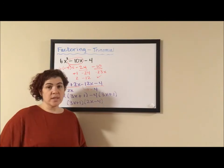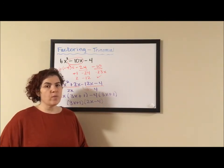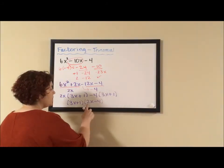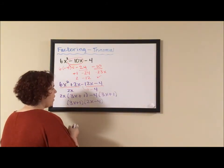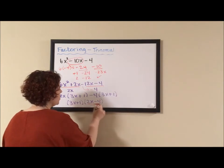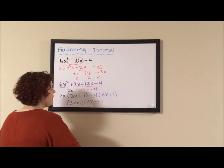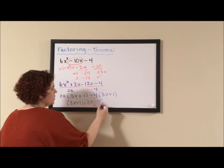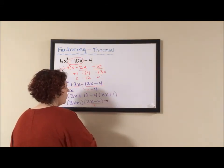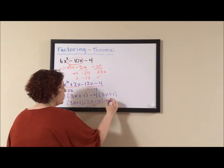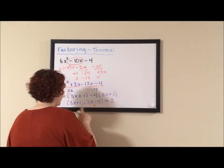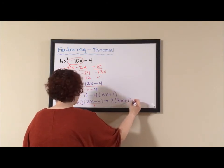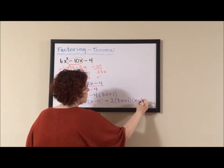2x minus 4 isn't. And you should recognize right away when you see a 2 and a 4 as your two coefficients that there's more to do. I need to factor a 2 out of both of these terms. And I'm going to write that 2 out front. I pull out that 2. I'm left with 2 times 3x plus 1 times x minus 2.